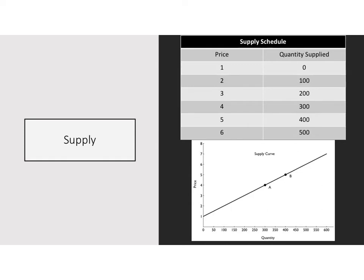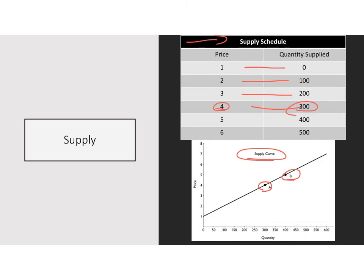Here we have a supply relationship represented by both a supply schedule and a supply curve. At a price of $1, quantity supplied is 0. At $2, quantity supplied is 100. At $3, quantity supplied is 200. At $4, quantity supplied is 300 — that's point A on our supply curve. Point B is the combination of a price of $5 and quantity supplied of 400. To illustrate supply, we need a schedule or a graph; quantity supplied is simply a number, such as 300 units at $4.